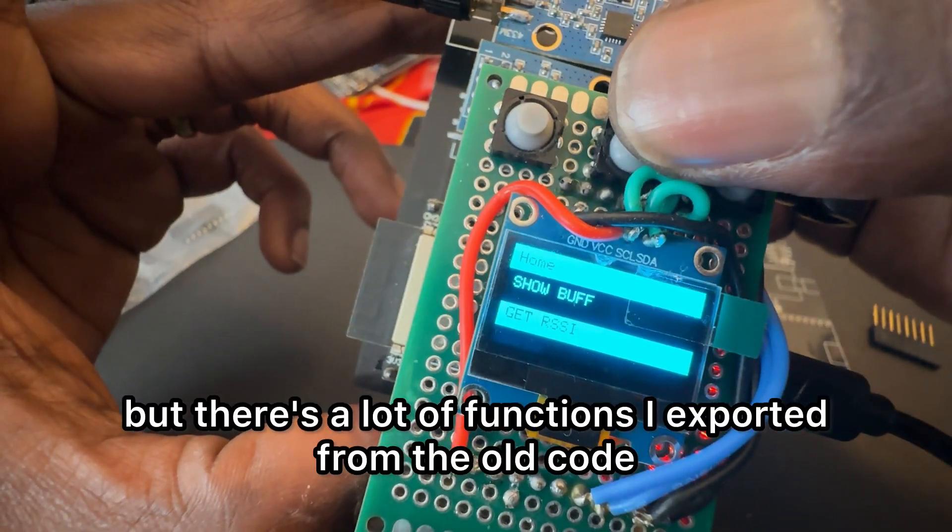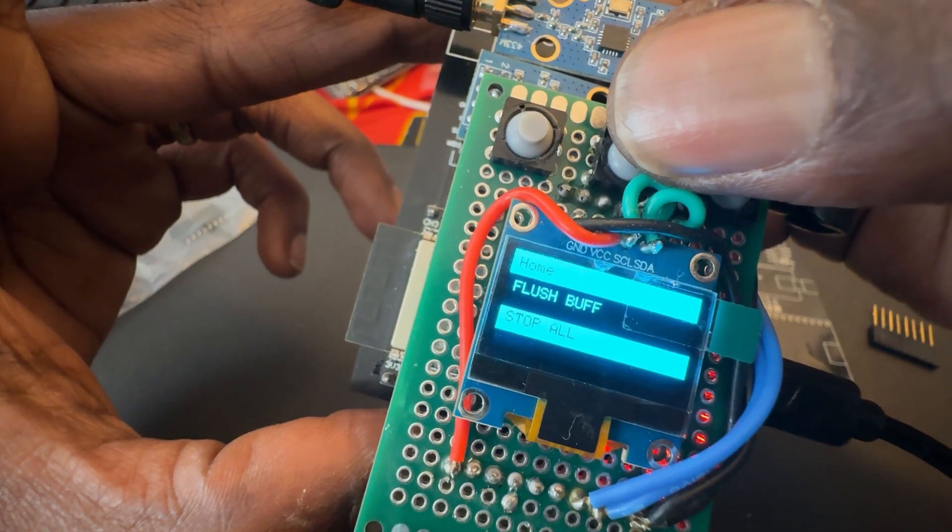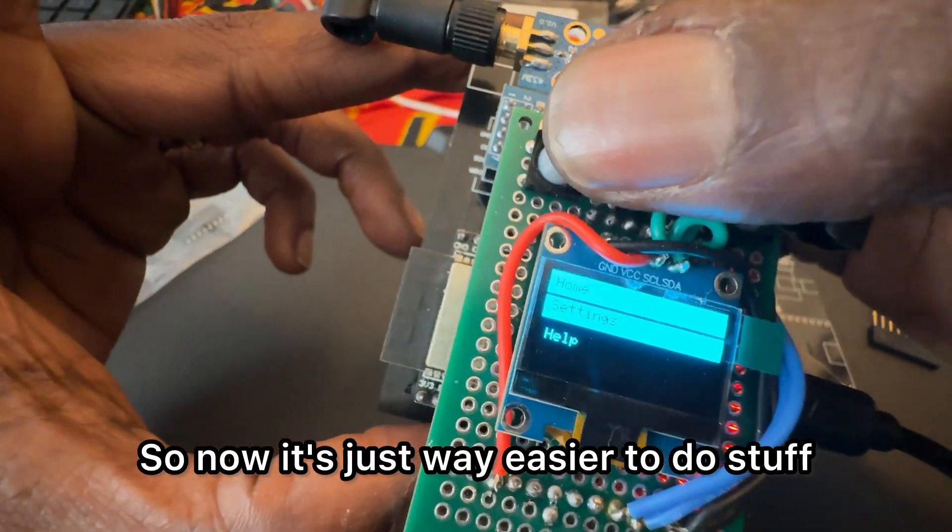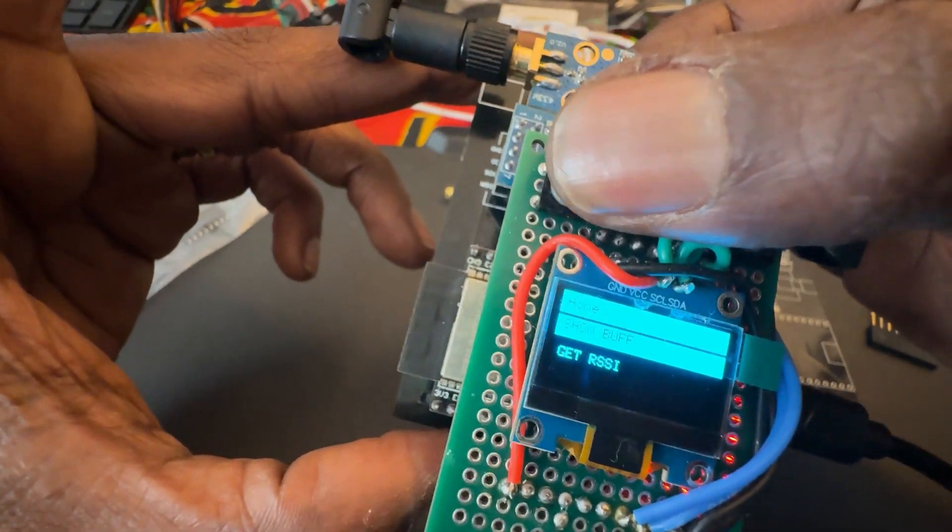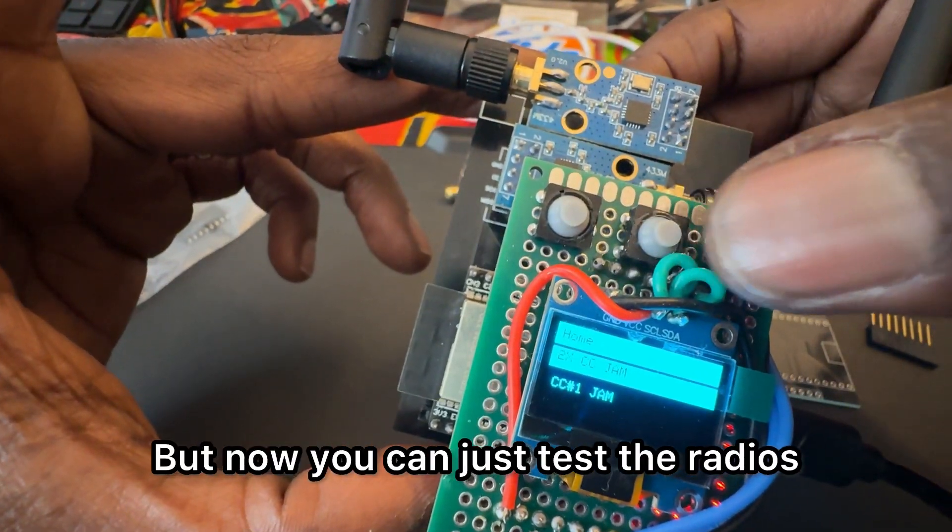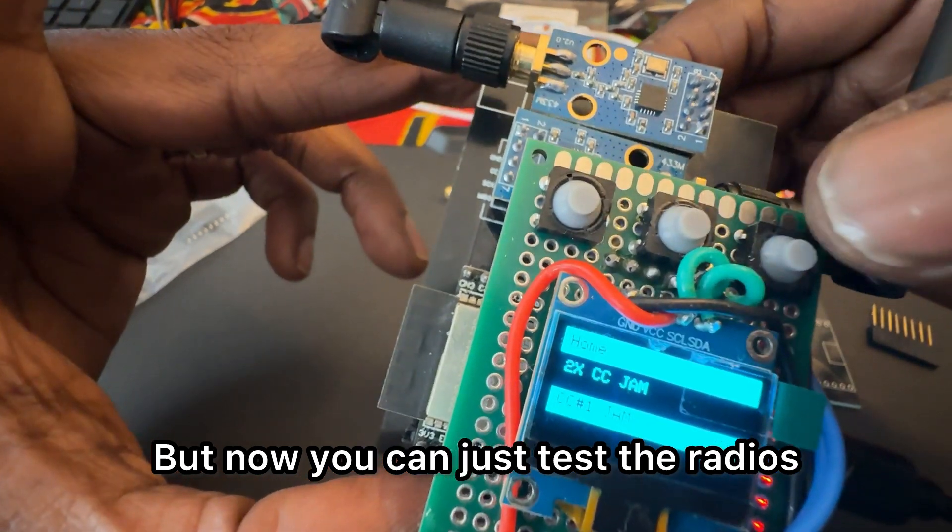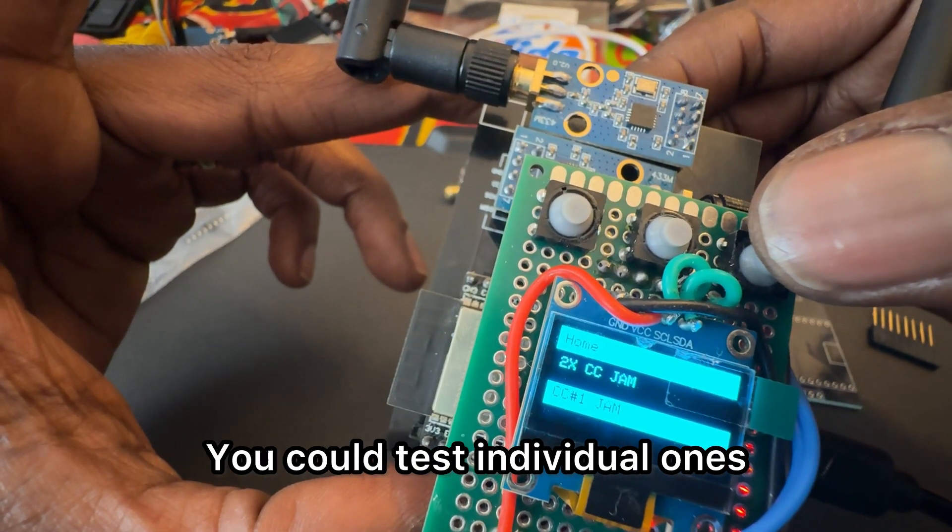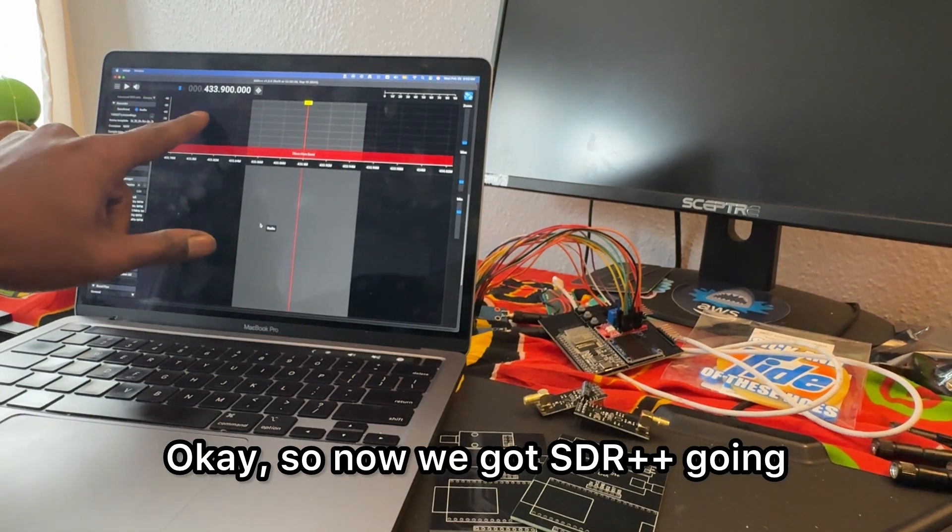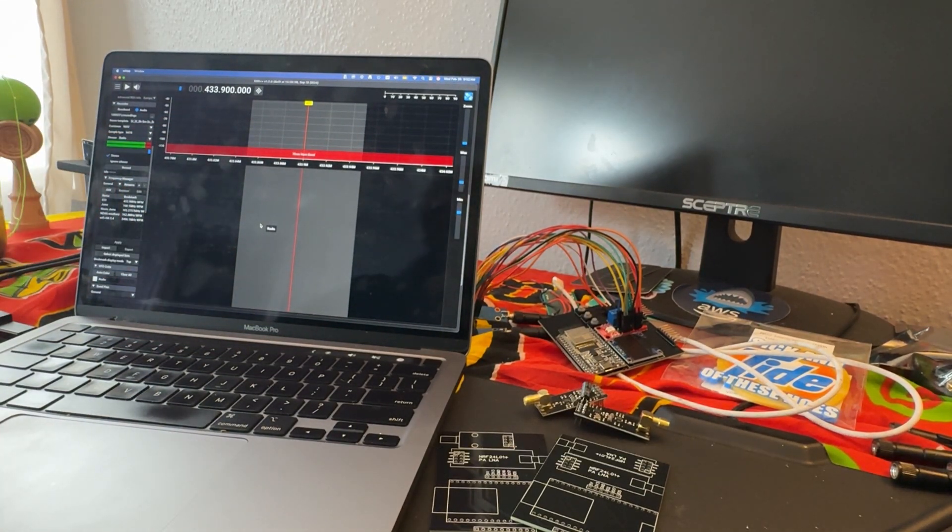This code is a work in progress, it's pretty much done but there's a lot of functions I exported from the old code. Now it's just way easier to do stuff and it'll combine as well into Starbeam. Now you can just test the radios, you could test individual ones. Okay, so now we got SDR plus plus going.